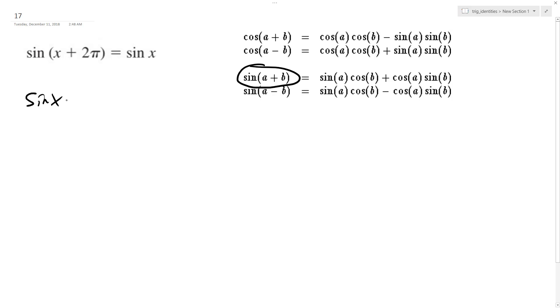So we have sine of x times cosine of 2π plus sine of 2π times cosine of x. So the cosine of 2π is the same thing as the cosine of 0, it's just 1, so we have sine of x.